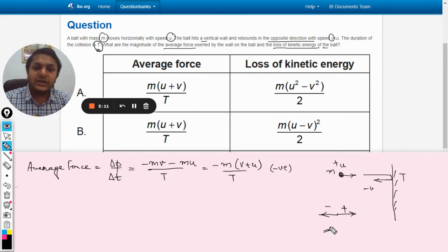So it means negative sign shows the direction of the force on the ball. Obviously the ball is experiencing a force towards left, towards the left, which is negative.